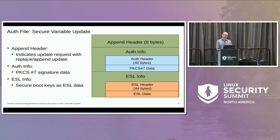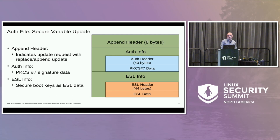This is what the auth file looks like — what we put our updates in. It has an append header that indicates whether the update is a replace or append, the auth info at the top (the signature that authorizes the update), and the ESL info at the end that actually contains the key material or the SBAT CSV. It is a CSV text file. Deletion is a special case — we pass empty data in the ESL.